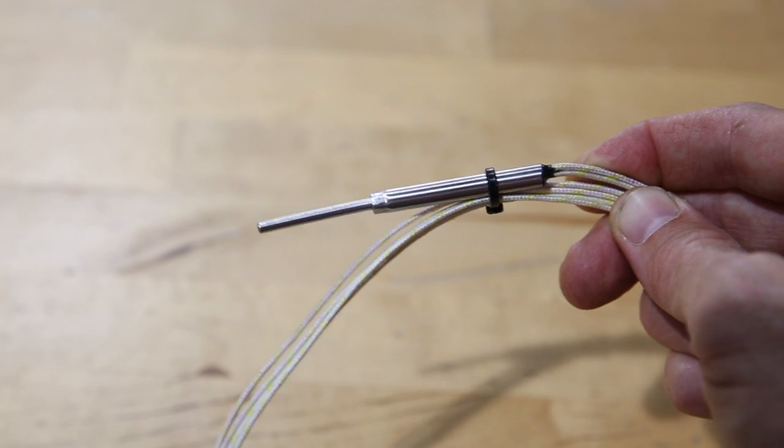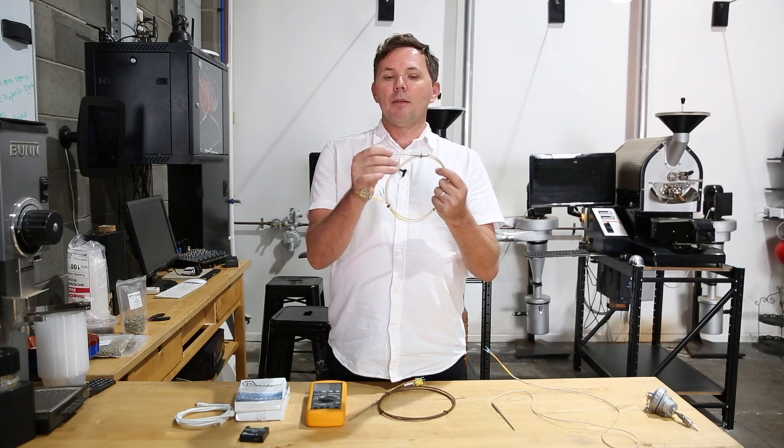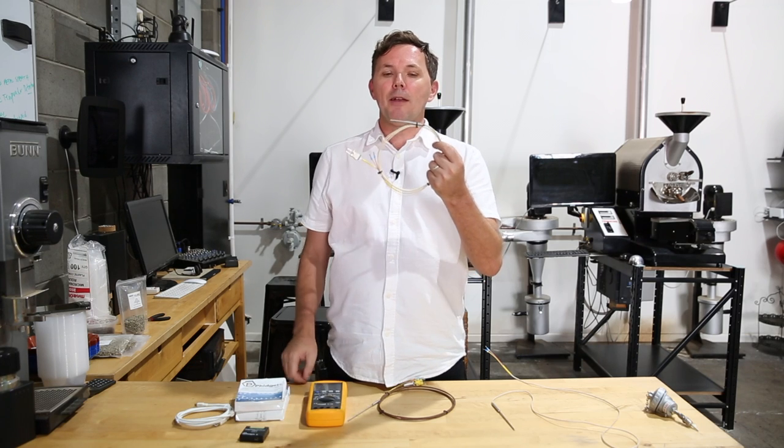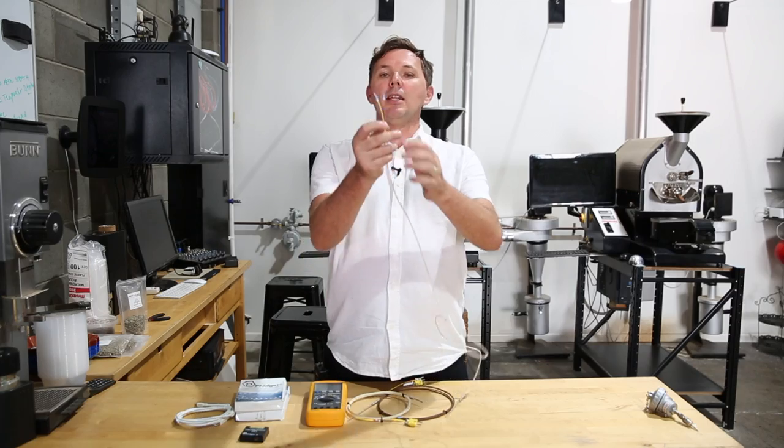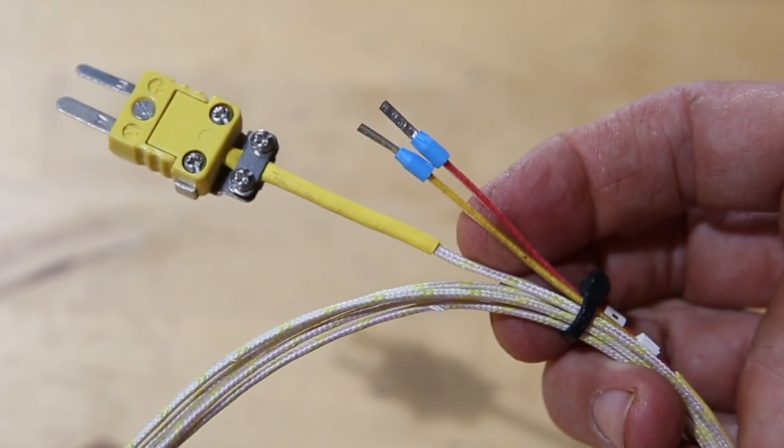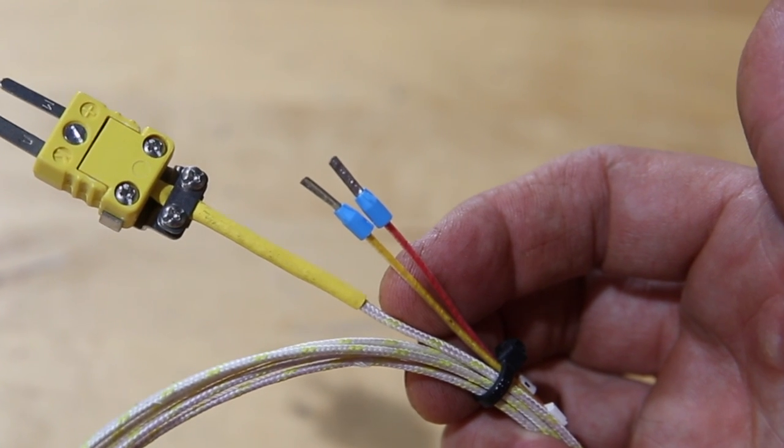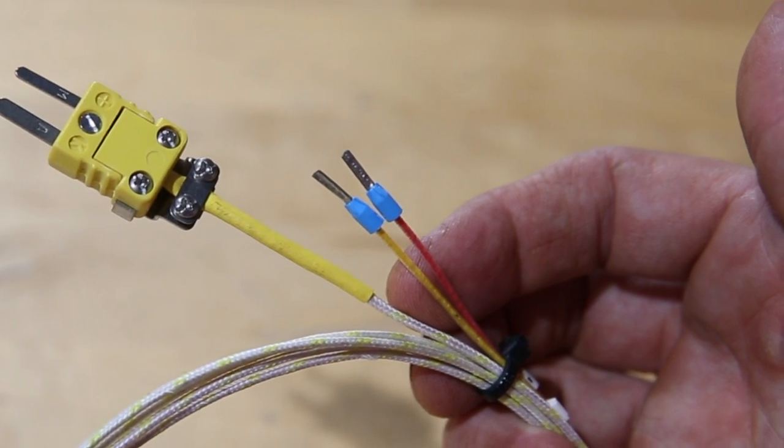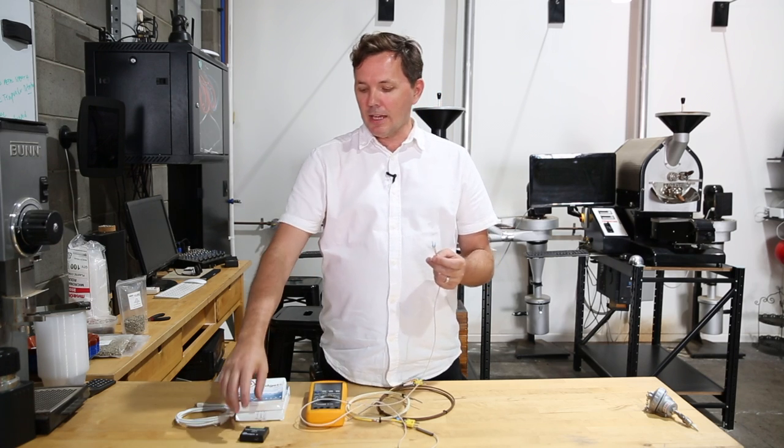All thermocouples only ever read on the tip. They don't read along the shaft at all. So all measurement is taken at that point. They typically come with a red and a yellow, or a positive and a negative polarity. You would be connecting this back into the existing input board that would be provided on your roaster, depending on what make or model it is.